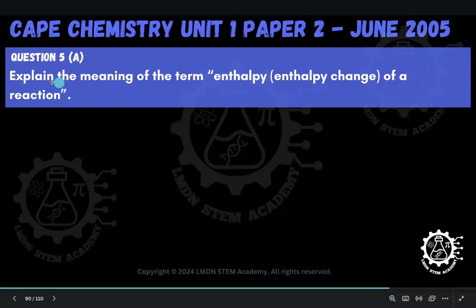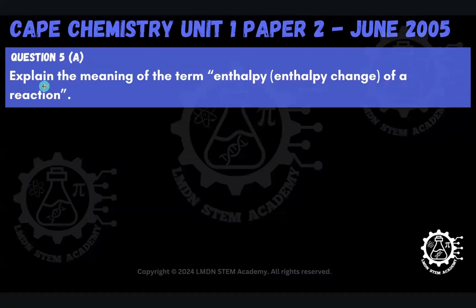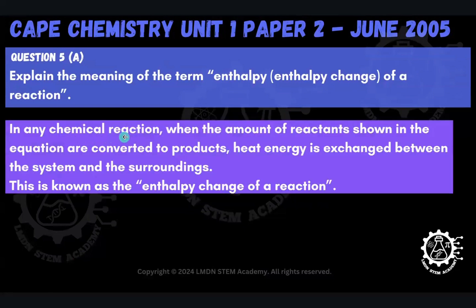The first part, Part A, asks us to explain the meaning of the term enthalpy change of a reaction. This is really the cornerstone of all things energetics. So in any chemical reaction, when the amounts of reactants shown in the equation are converted to products, heat energy is exchanged between the system and the surroundings. And this is known as the enthalpy change of a reaction.